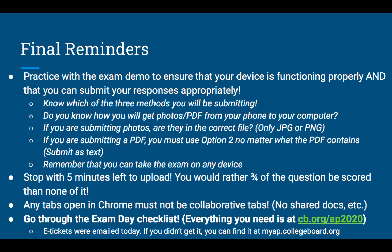They recommend that you take it in Chrome — you cannot use Internet Explorer for this exam. Make sure that you go through the exam day checklist; now that you have your e-ticket, you can start going through that checklist. Everything you need is at cb.org/ap2020. Your e-tickets were emailed out today. If you did not receive your e-ticket, you can find it at myap.collegeboard.org, where you'll find your AP ID and the link to the exam. Make sure you have your AP ID and your initials at the top of each page.